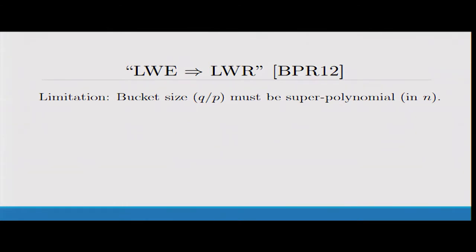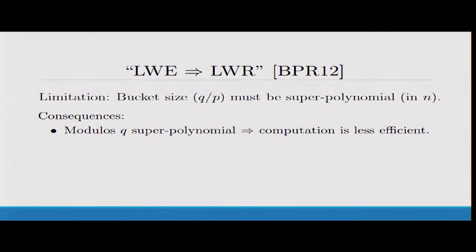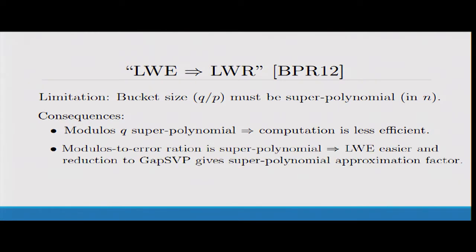One issue with this approach is that you're gonna need the bucket size to be really big, in fact super polynomial. This has problematic consequences. The modulus Q needs to be super polynomial, which means computing your inner product is not so efficient. Also the modulus to error ratio is super polynomial, and when you push the reduction to gap SVP from Regev, you end up with a super polynomial approximation factor.